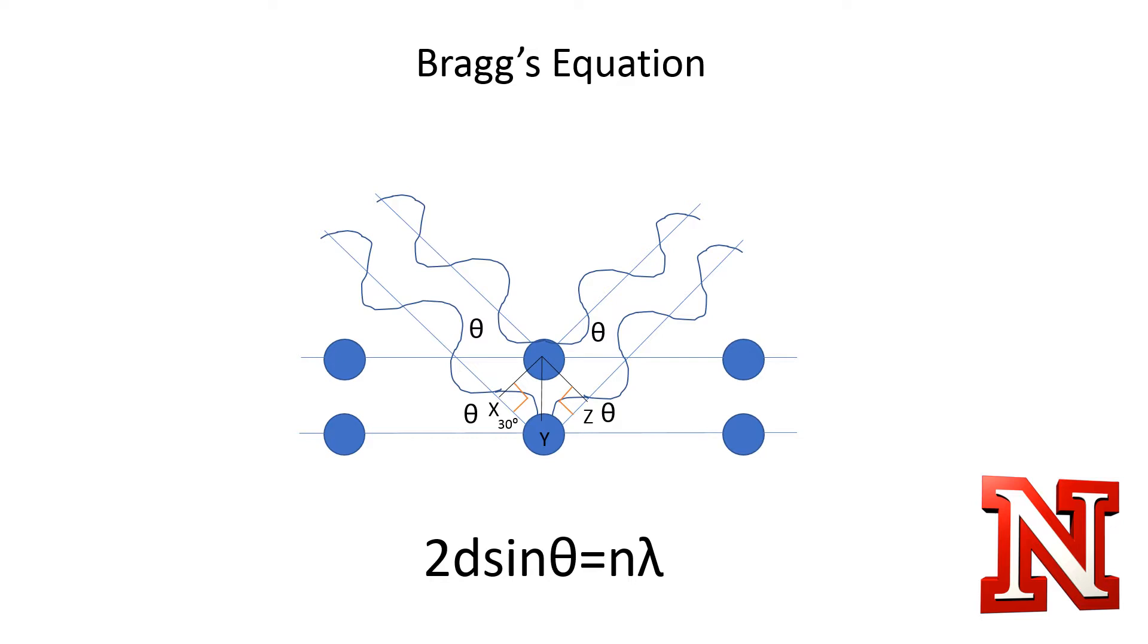We know the 30-degree angle plus the other angle must be 90 degrees, so the other angle must be 60 degrees. So we can now determine that the final angle is 30 degrees, the same as the incident angle. So these two angles are always congruent. We can now use the law of sine and calculate the hypotenuse, which is the distance between atoms.